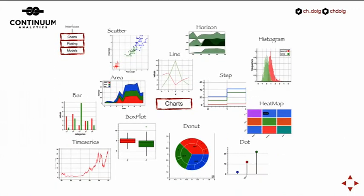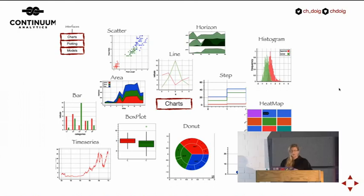The first section is Charts, which is the high-level API that allows you to draw standard visualizations: scatter plots, area plots, bar plots, time series, box plots, donut, dot — those are the ones currently available. The neat thing about Charts is there are a lot of defaults, and just by passing a DataFrame, dictionary, or NumPy array, you're able to generate these plots. Bokeh is smart enough to know what you mean when you pass a DataFrame — for example, passing a group-by to generate a scatter plot with different labels for groups.